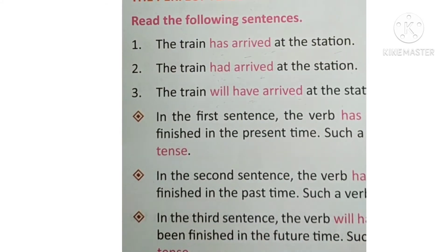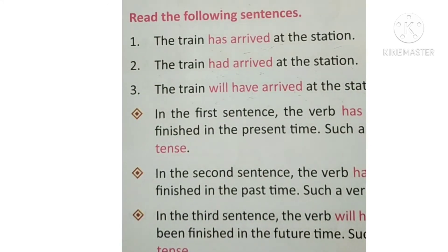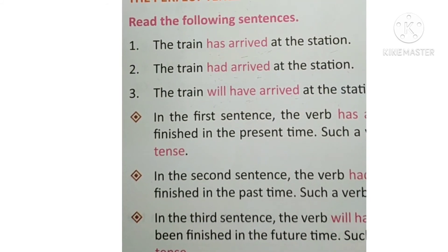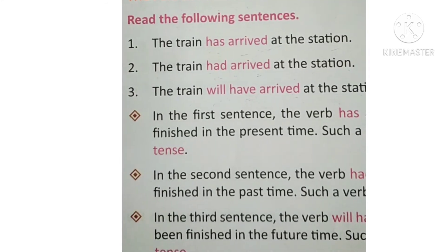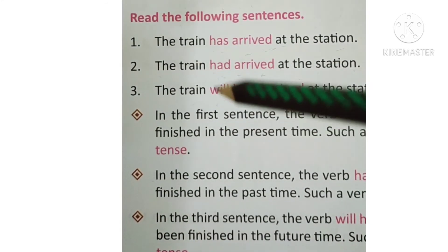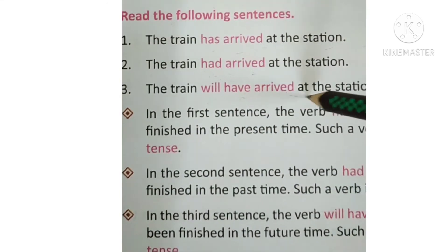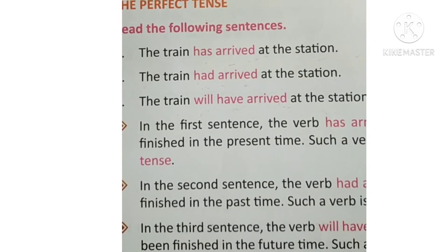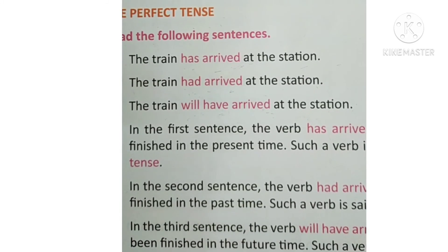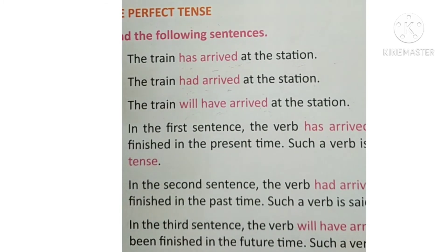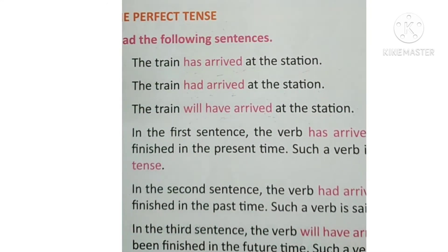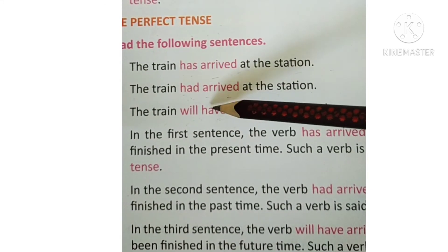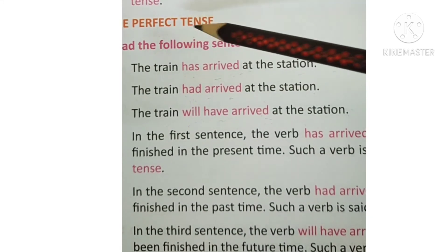Had arrived matlab jab past ki jo baat aap bata rahe ho us waqt train pahunch chuki thi. So when we reached the station, train had arrived — matlab woh action us waqt poora ho chuka tha, train pahunch chuki thi station. Train will have arrived at the station means by the time we reach the station, the train will have arrived — jab tak hum station pahunchenge tab tak train aa chuki hogi station pe. So 'will have arrived' is showing in the future time. So has, had, and will have show the perfect tense.